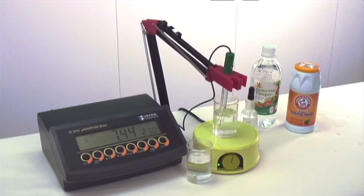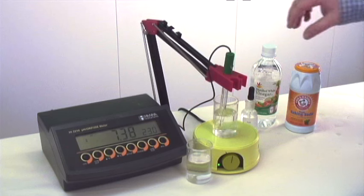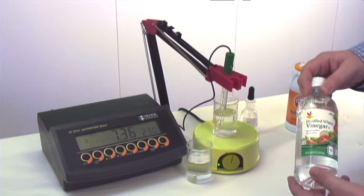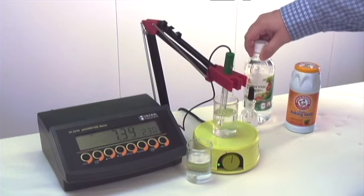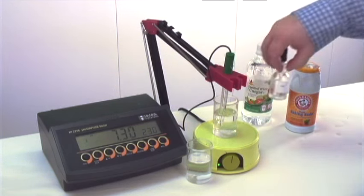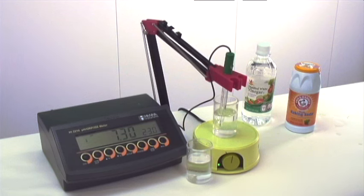We can see the pH is starting off around 7.4, and we're going to slowly add an acid. In this case, we're using vinegar, which contains acetic acid, and we're going to add it in drop by drop to see how quickly we can change the pH.